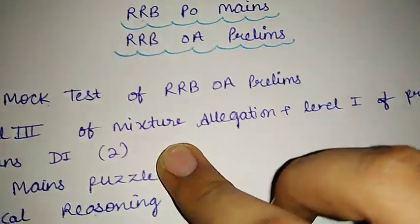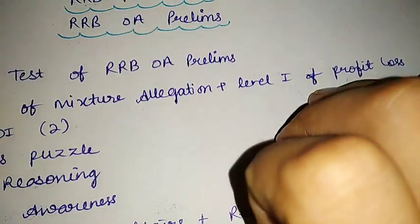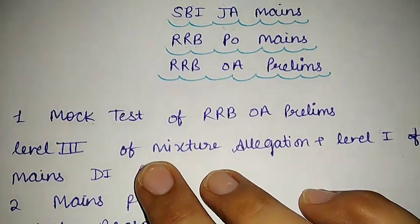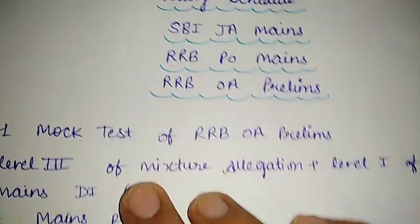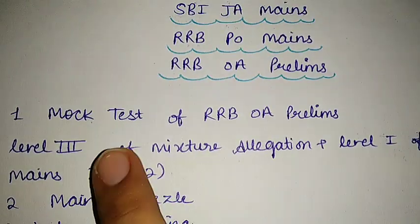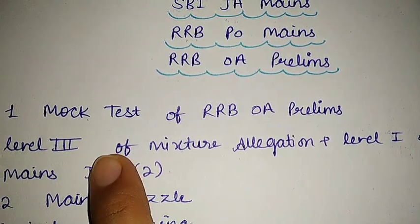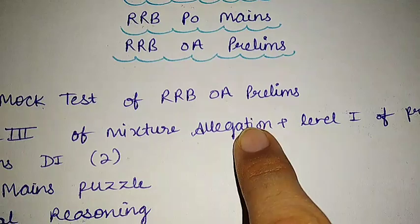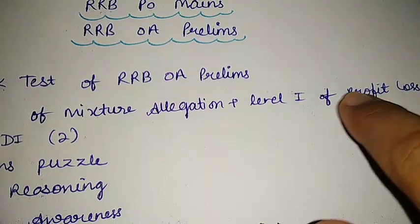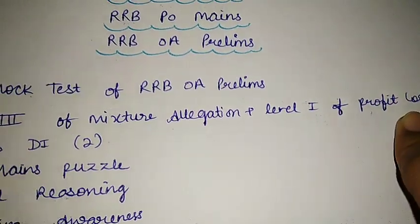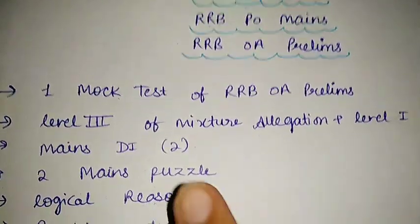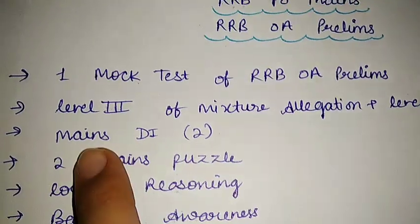Then there is Level 3 of Mixture and Allegation and Level 1 of Profit and Loss. What I am doing nowadays is Level 3 of one chapter daily, and after that Level 1 of the next chapter, so it balances both things.